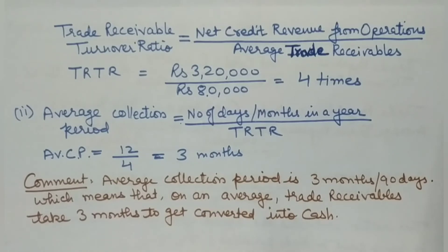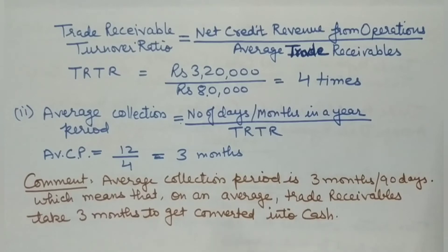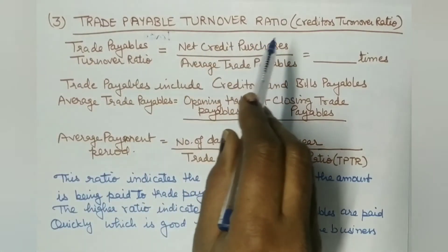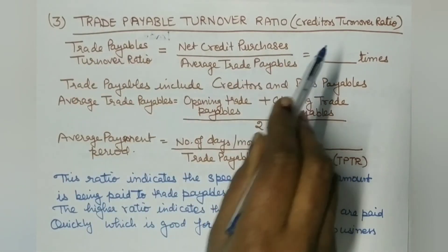In simple terms, if we make a sale today, we will receive the cash approximately 3 months later. This is the trade receivables turnover ratio. Similarly, we now have the trade payables turnover ratio — also called creditors turnover ratio — which works in a similar fashion.